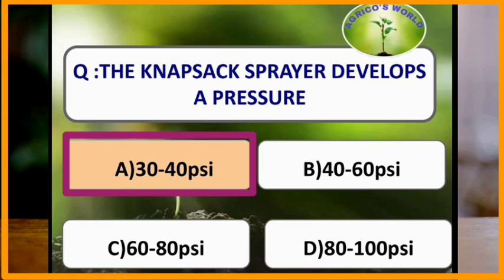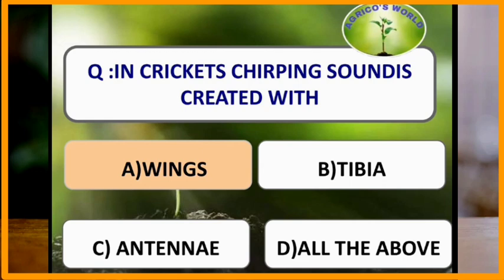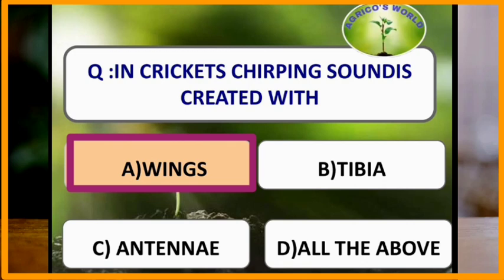Chirping is done by male crickets. In crickets, the chirping sound is created with the wings.